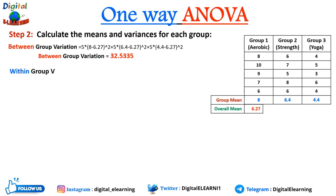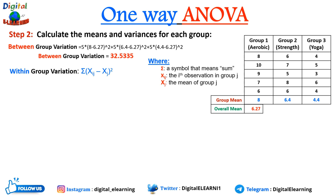Now we calculate the within-group variation using the formula: Σ(xij − x̄j)², where xij is the ith observation in group j and x̄j is the mean of group j. For group 1 we compute: (8−8)² + (10−8)² + (9−8)² + ... + (6−8)², which comes to 10.